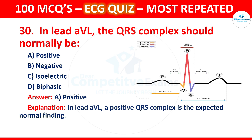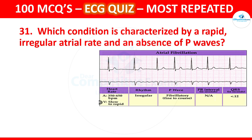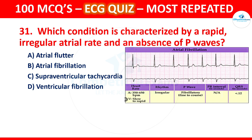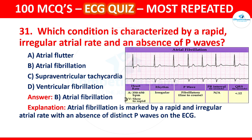Question 31: Which condition is characterized by a rapid irregular atrial rate and an absence of P waves? Options are atrial flutter, atrial fibrillation, supraventricular tachycardia, or ventricular fibrillation. The correct answer is atrial fibrillation. Atrial fibrillation is marked by a rapid and irregular atrial rate with an absence of distinct P waves on the ECG.